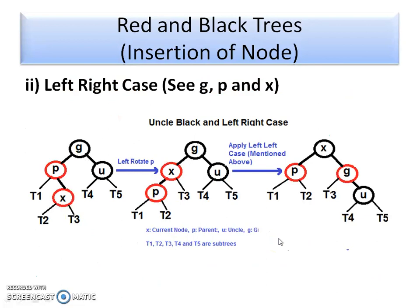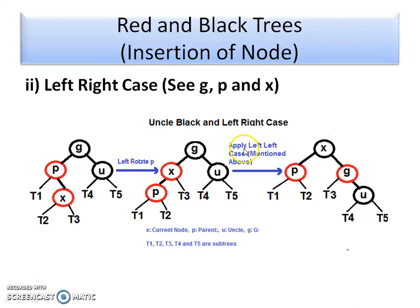For the left-right case: the grandparent's left child is the parent, and the newly inserted node X is inserted as the right child of the parent. We perform a left rotation first — X becomes the parent and P becomes the child — and then apply the left-left case, performing an RR (right) rotation. The result is a balanced Red-Black tree.